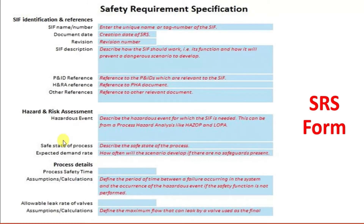Here we are seeing a sample of the SRS form. It includes CIF identification and references, hazard and risk assessment, process details, and other sections. In the CIF identification and references section, the first point is CIF name and number — the unique name or tag number of the CIF, such as CIF-001, CIF-002, or CIF-E01, according to the plant documentation philosophy. The documentation date, date of creation, and any revisions are also inputted. CIF description describes how the CIF should work, its function, and how it will prevent a dangerous scenario from developing.